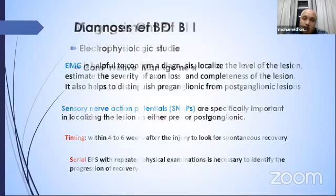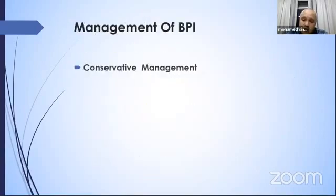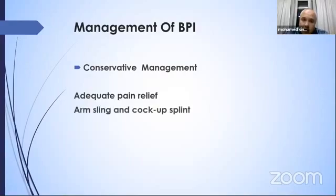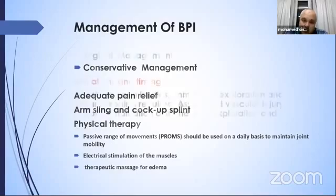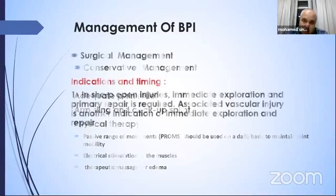Management of brachial plexus injury: conservative management includes adequate pain relief, arm sling, cock-up splints to prevent deformities, and physiotherapy. Passive range of motion is very important and should be performed daily to maintain joint mobility and prevent contractures and deformities. Electrical stimulation of the muscle and therapeutic massage are also used.